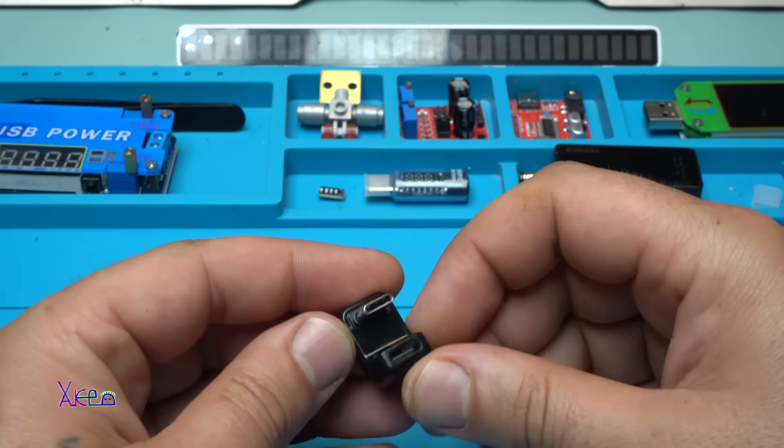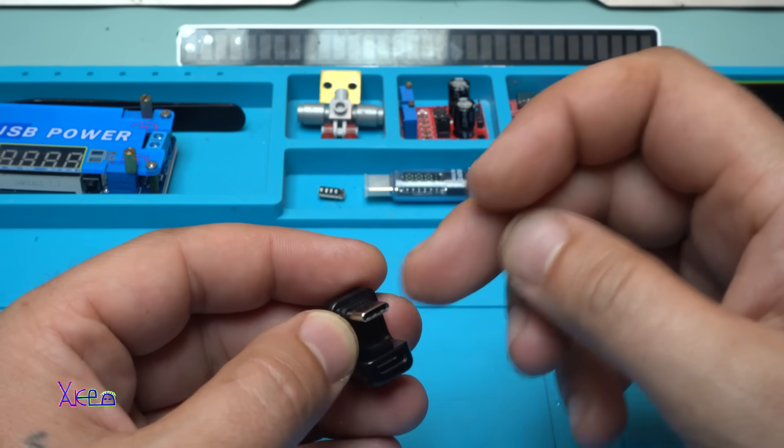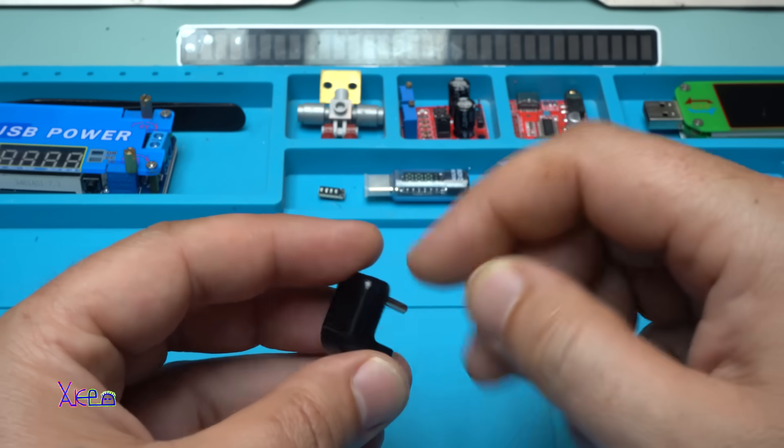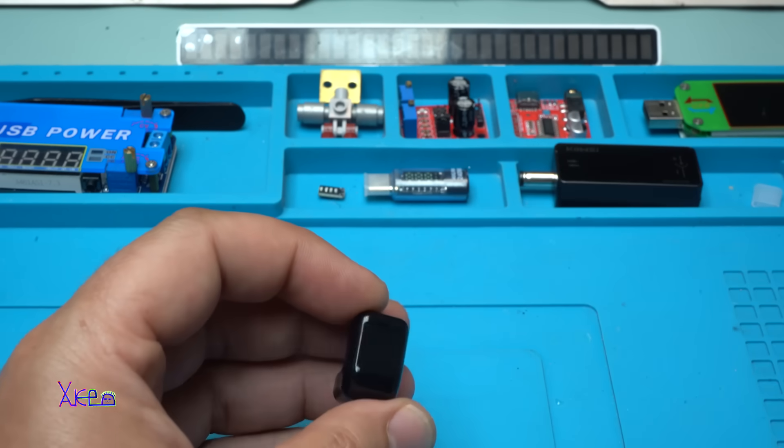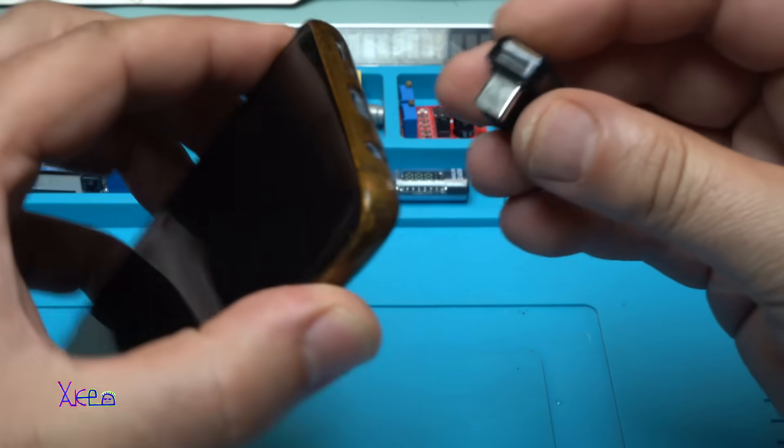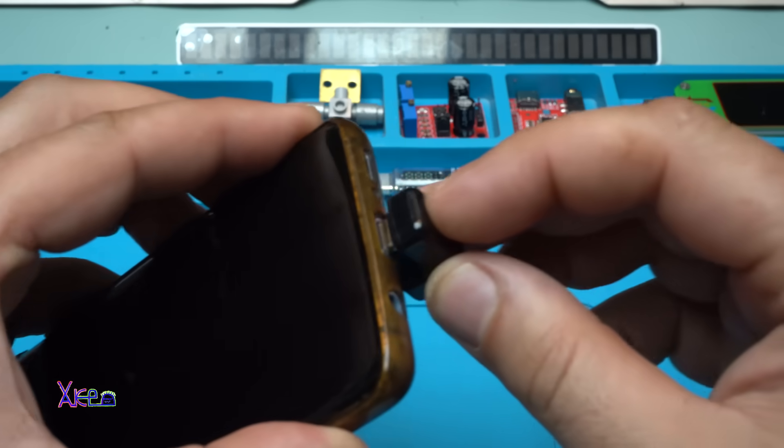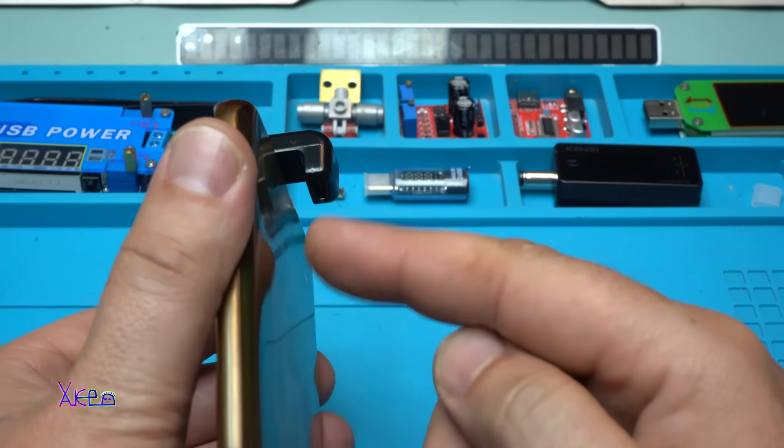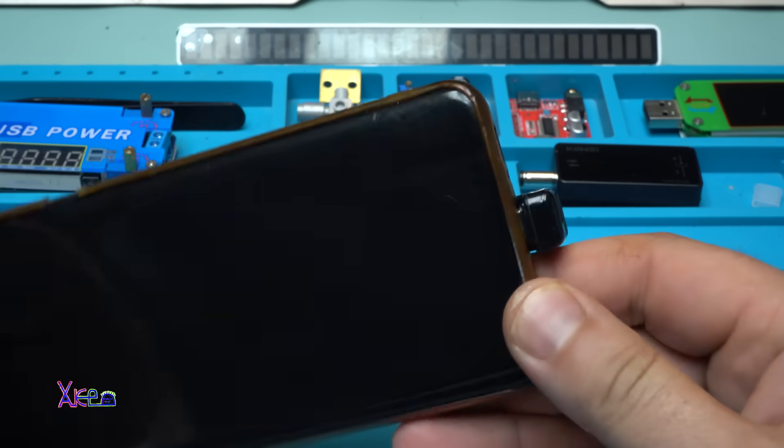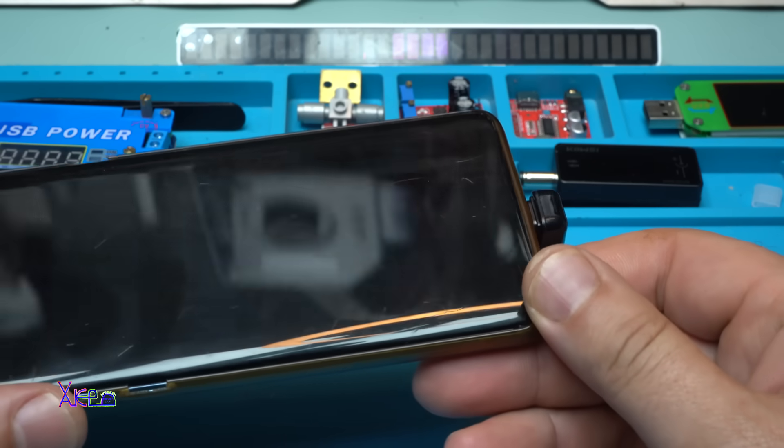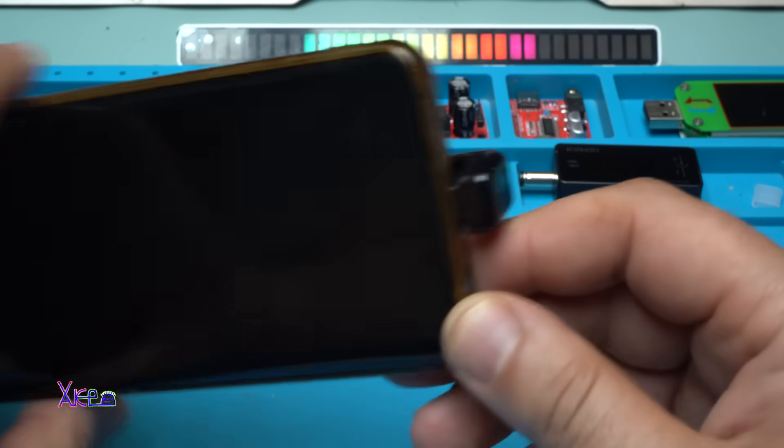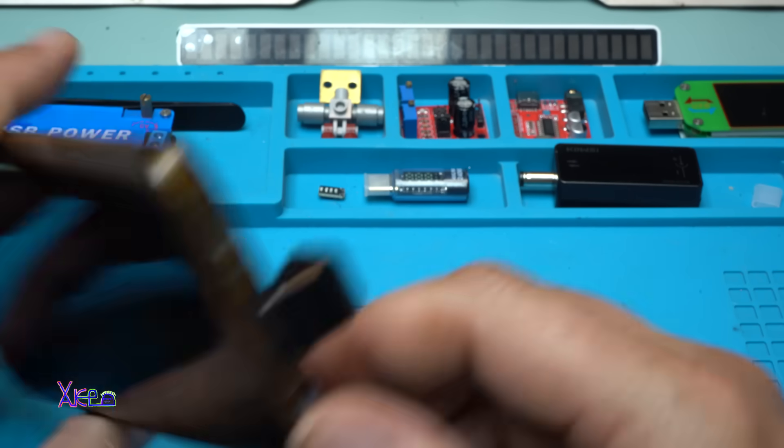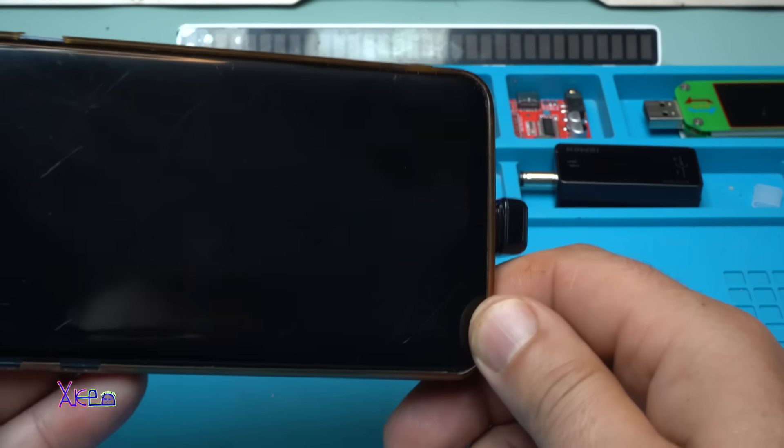Here it is: male Type-C to female U-shape, so you can plug in just like this and the cable will go behind the phone. Is it useful or not? Please tell me in the comments below. I would like to hear your feedback.